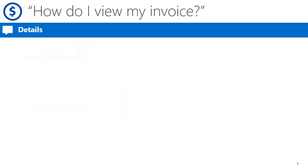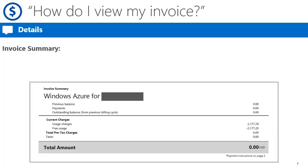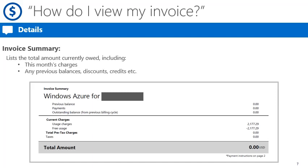You now know how to view your invoice either through email or download. We want to give you some brief background on your bill. First, the invoice summary lists the total amount owed for your subscription. This includes the monthly charges and any previous balances, discounts, or credits.